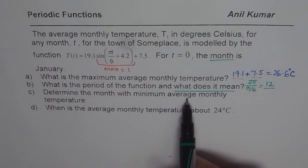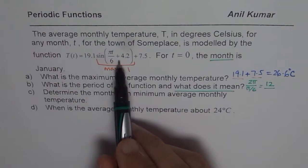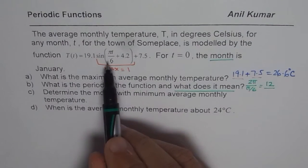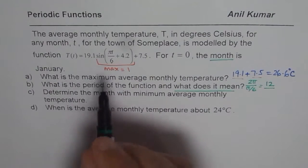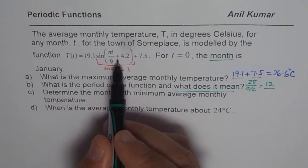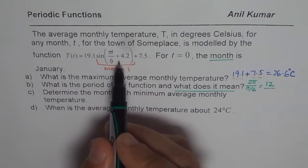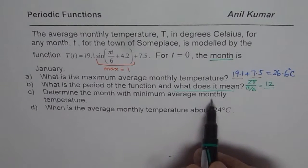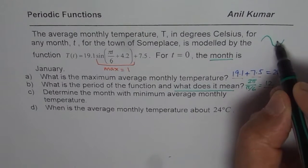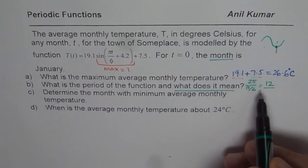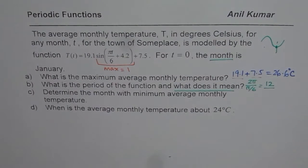Now: determine the month with minimum average monthly temperature. We have minimum when sine equals −1. One approach: find sine⁻¹(−1) and equate that to πt/6 + 4.2, working in radians. A second way is that in a sine function, the minimum occurs at three-quarters of the cycle, and in this case the cycle is shifted 4.2 units left, so three-quarters of the period minus 4.2 would also give the minimum. But let's follow the step-by-step approach.